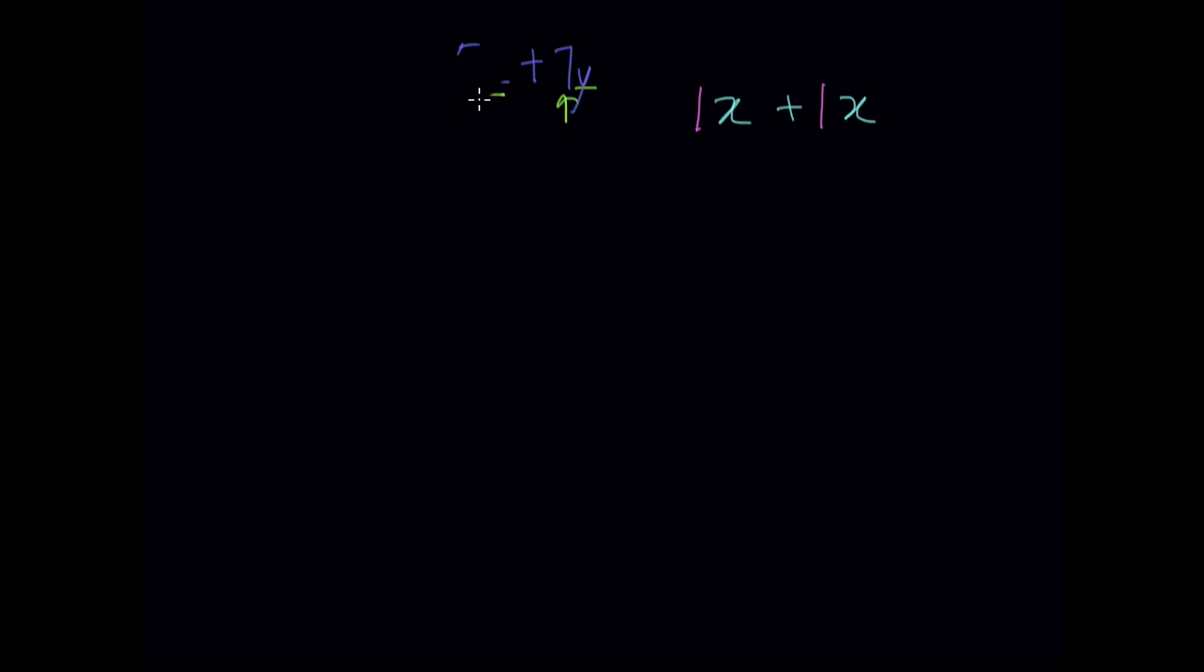So let's get started with algebraic expressions which have fractions in them. If I have something like 3/4x plus negative 7/4x plus 3, the first thing you have to do is open brackets. You see two different signs here together - a positive and a negative. So the first thing you have to do is open brackets.